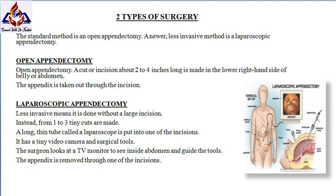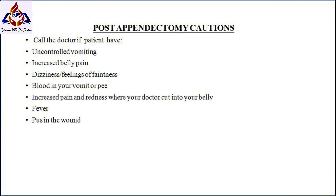A laparoscopic appendectomy is less invasive — it is done without a large incision. Instead, one to two tiny cuts are made. A long, thin tube called a laparoscope is put into one of the incisions; it has a tiny video camera and surgical tools. The surgeon looks at a TV monitor to see inside the abdomen and guide the tools, and the appendix is removed through one of the incisions.